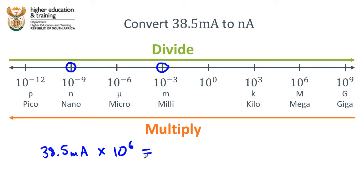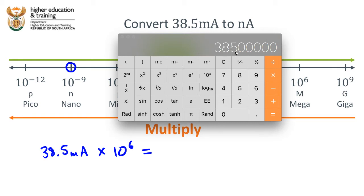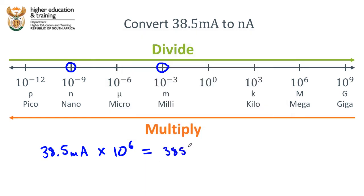So 38.5 milliamps multiplied by 10 to the power of six — because that is the difference between negative nine and negative three, and we are going from bigger units down to smaller units. Using the calculator: 38.5 multiplied by 10 to the power of six is 38,500,000 nanoamps. We have moved from milliamps all the way down to nanoamps.